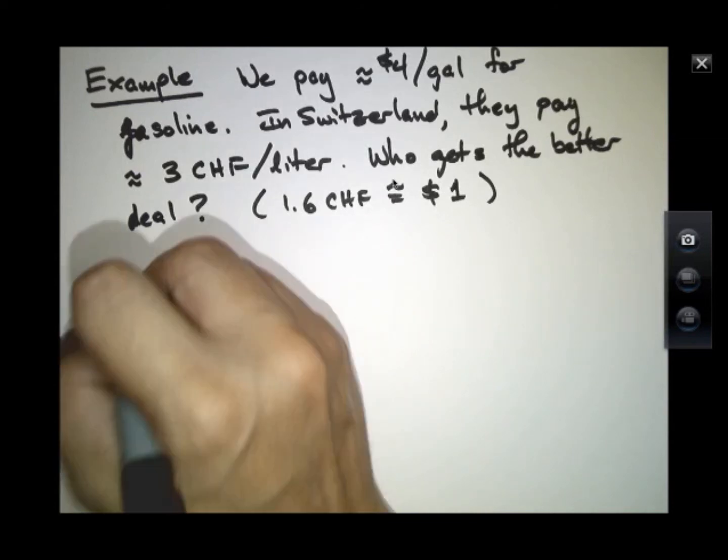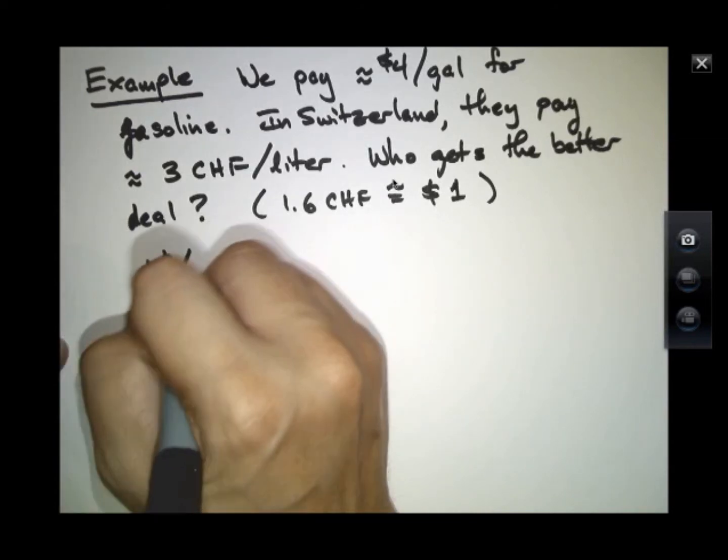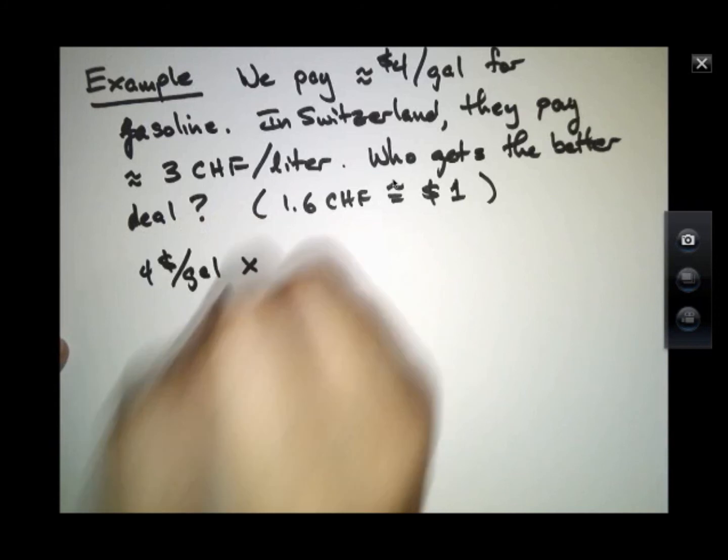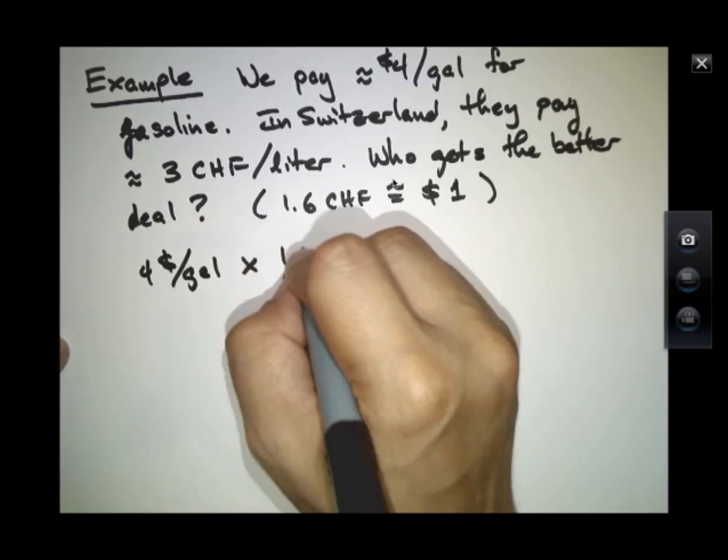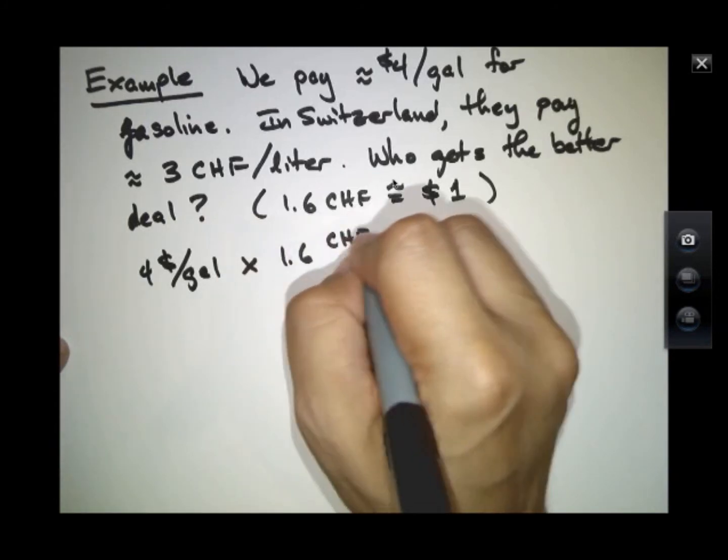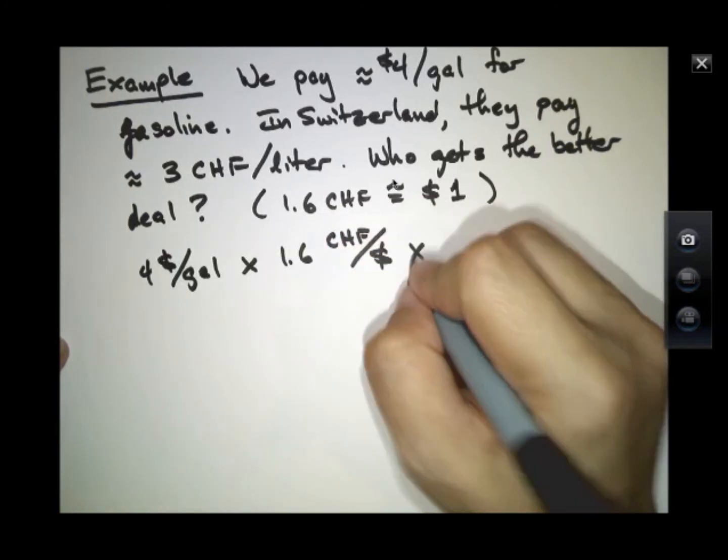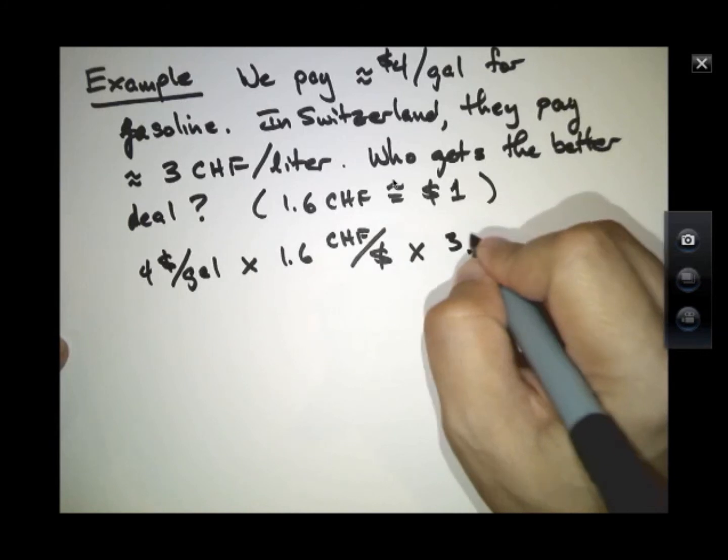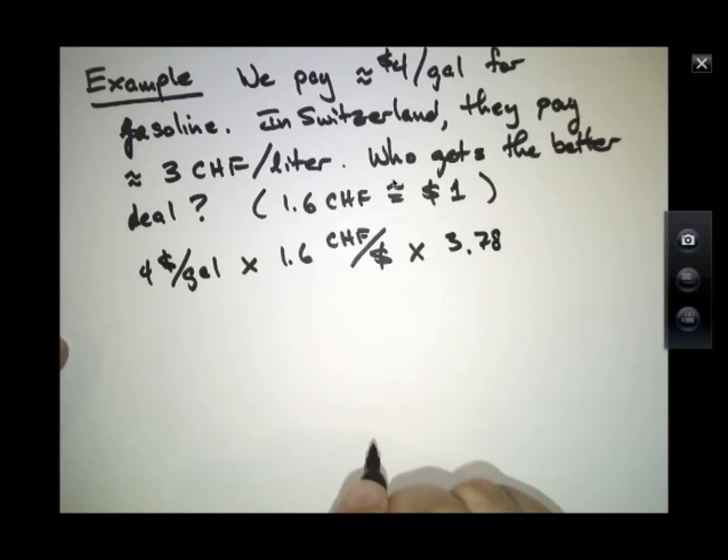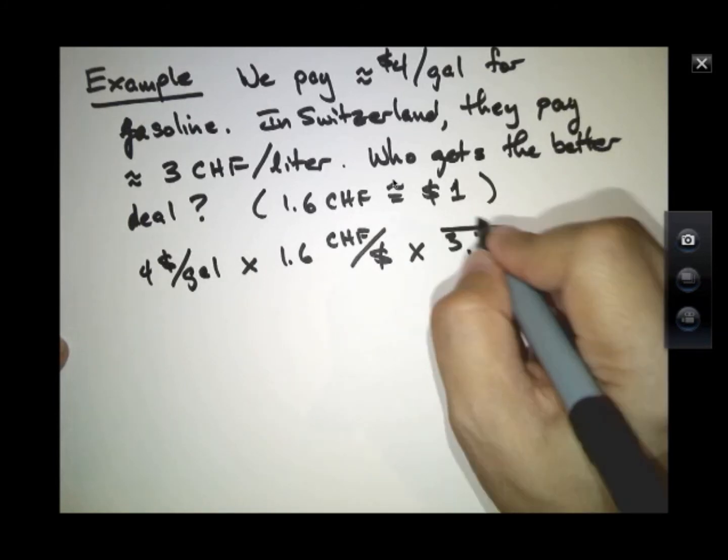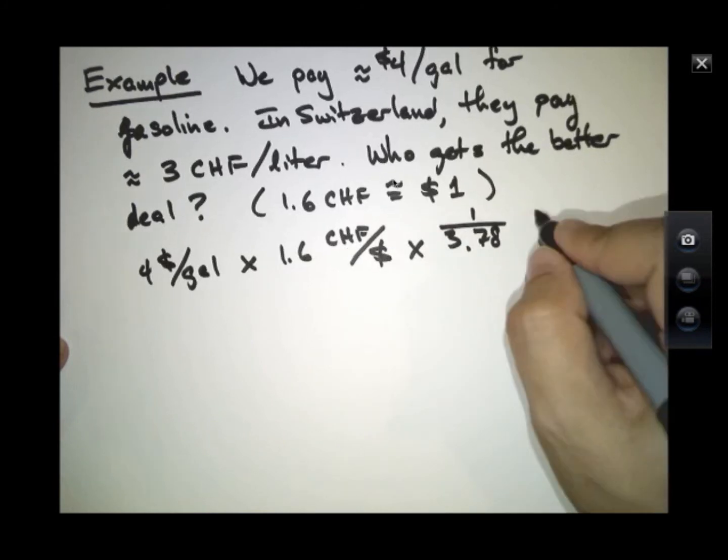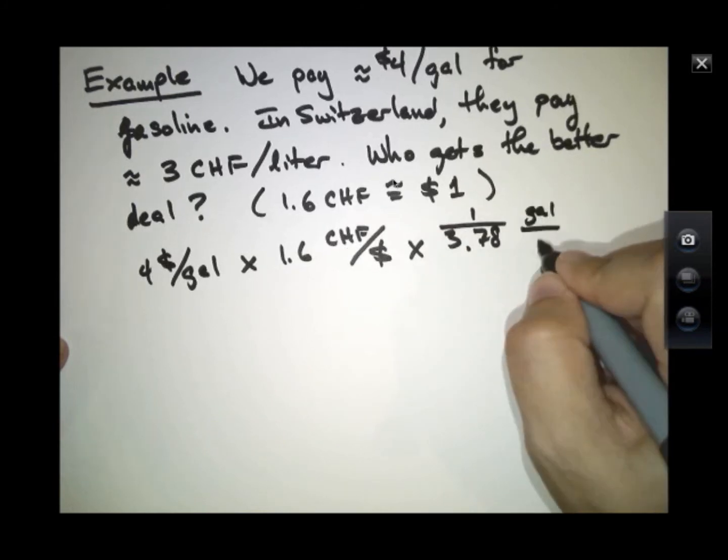As a result, $4 per gallon should be multiplied by 1.6 Swiss francs per dollar. And we said that there are 3.78 liters in a gallon, so actually I need to multiply by 1 gallon is 3.78 liters.